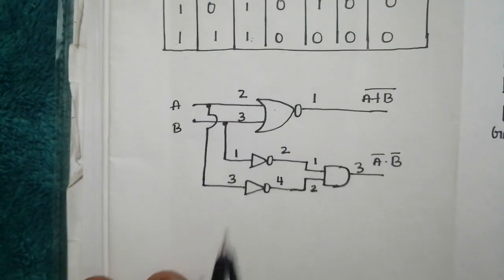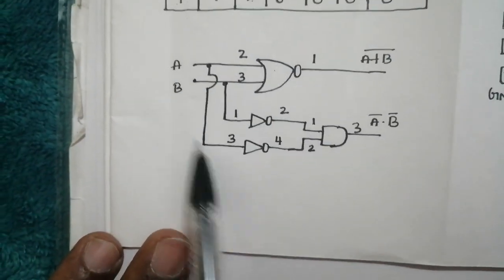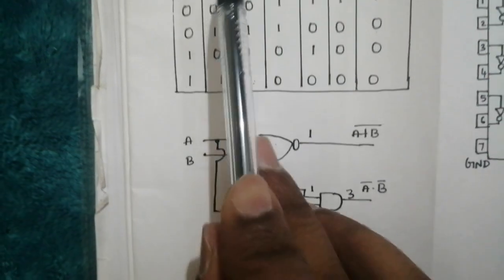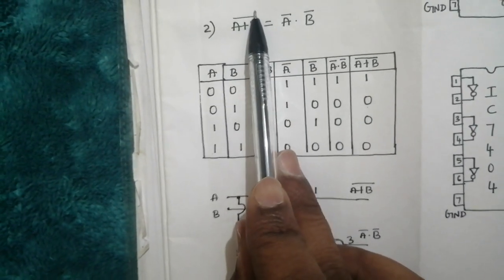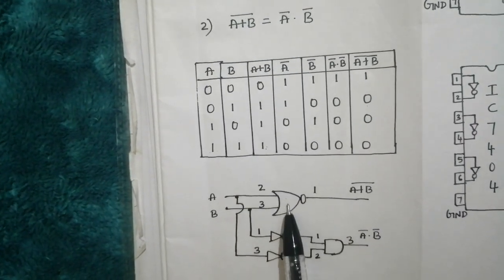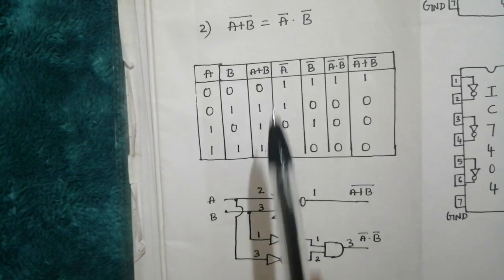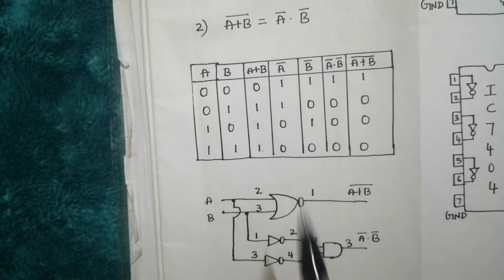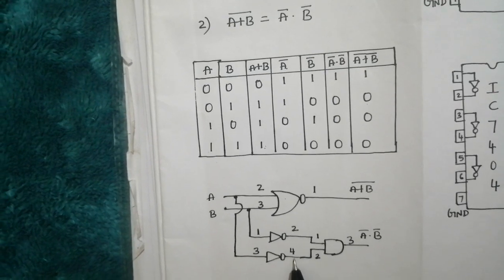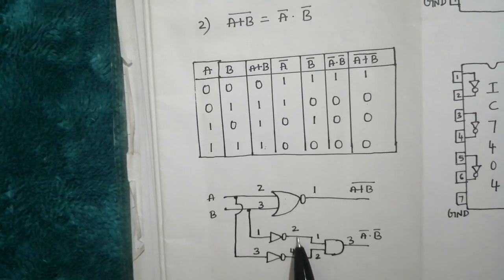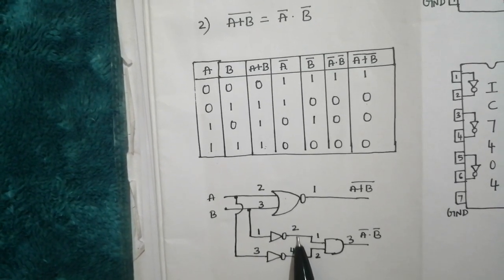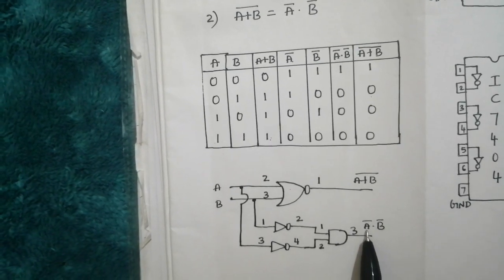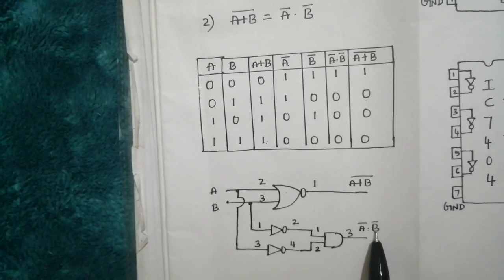The respective boolean circuit is given below. Here we have A plus B whole bar, that is constructed by using NOR logic gate. Next I have A bar B bar. So A bar is ready at this point, B bar is ready at this point. So if I do AND operation, the output will become A bar AND B bar.